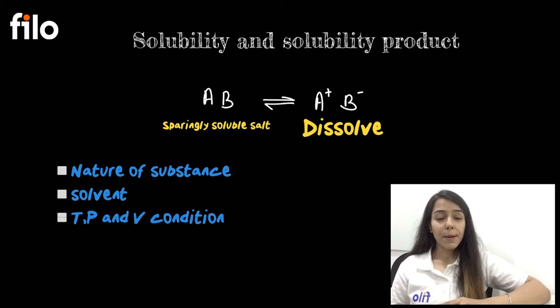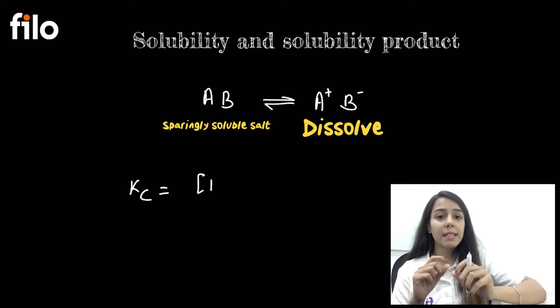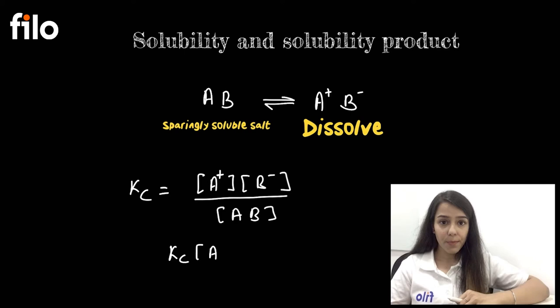So let's say if I talk about the constant of dissolution that will be kc, that would be equal to the product of [A⁺][B⁻] divided by the salt that we took, that was the solid substance [AB]. Now this solubility product is what? Kc into the substance that we took into the solid form.